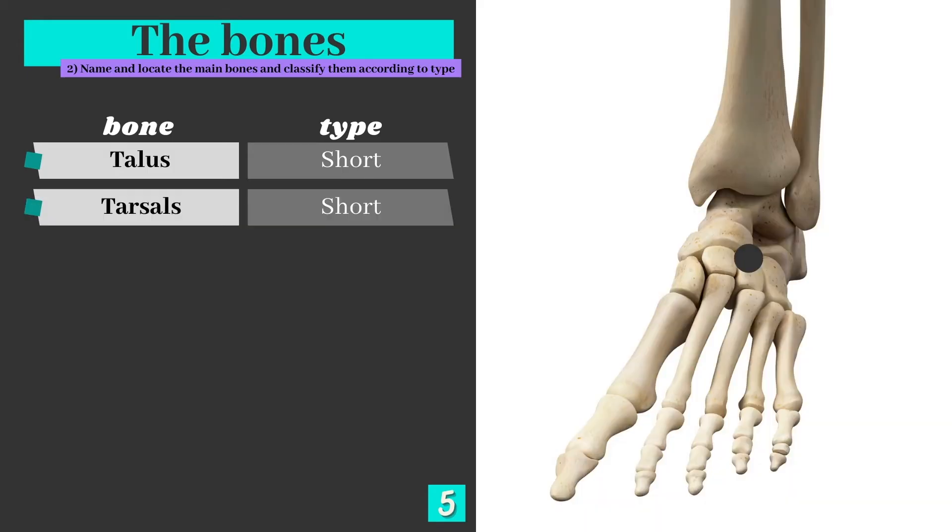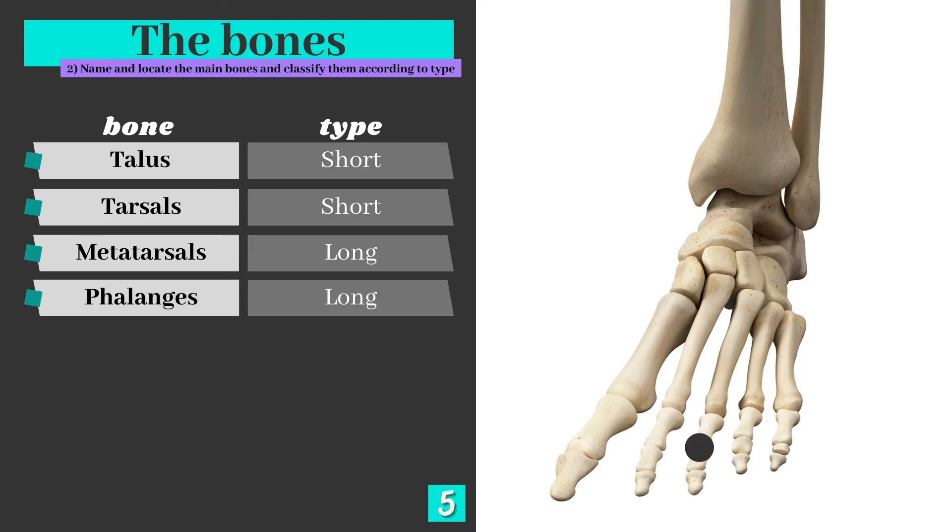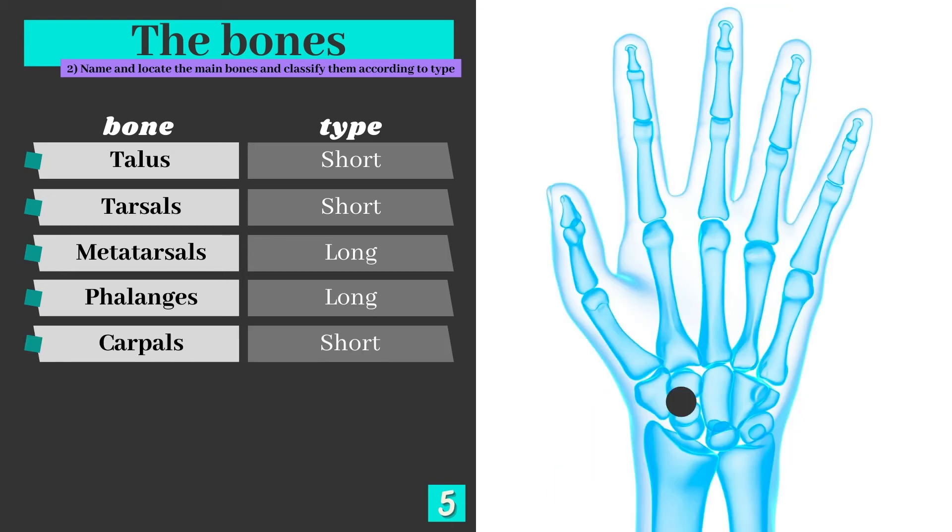The tarsals sit just below the talus and are also short bones. They connect to the metatarsals below, which are long bones, not because of their absolute length, but because they're much longer than they are wide. The phalanges are also long bones. They're the really small ones that we know as the toes.